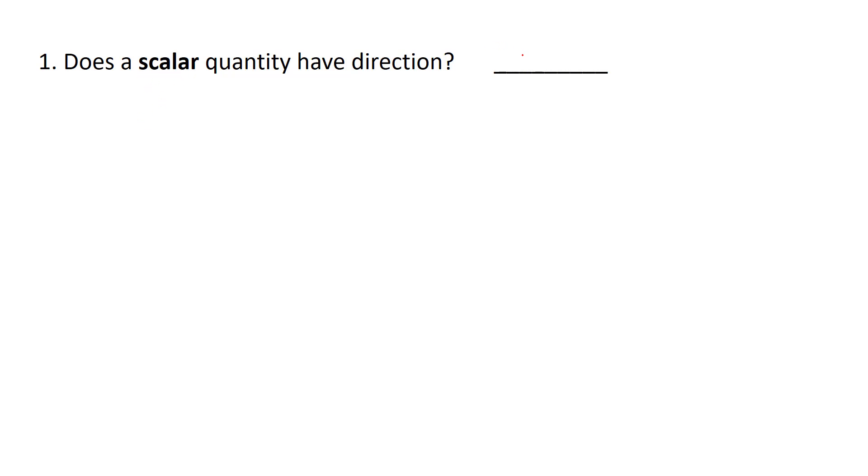The term scalar has no direction. It's only a magnitude without the direction. Two parts of a vector are going to be the magnitude, like a scalar, but then you're also going to have a direction.